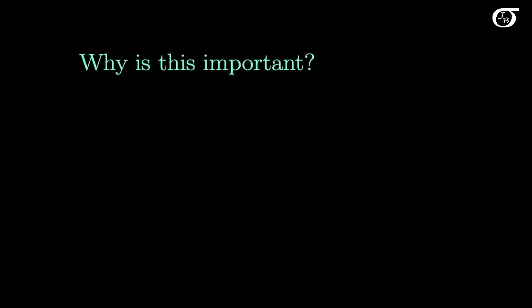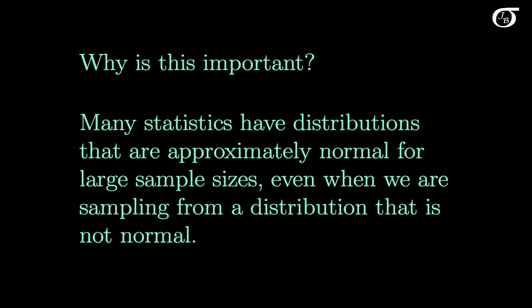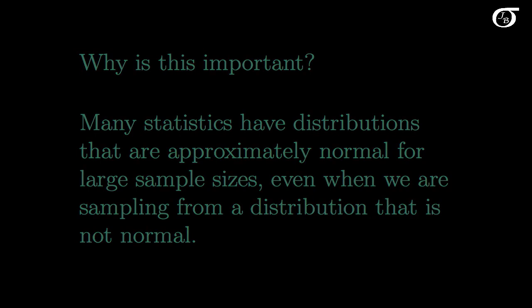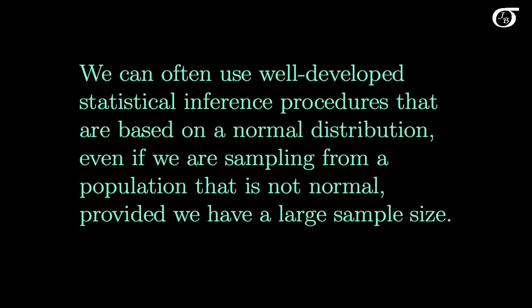Why is this important? The central limit theorem tells us that many statistics have distributions that are approximately normal for large sample sizes, even when we are sampling from a distribution that is not normal. That means we can often use well-developed statistical inference procedures based on a normal distribution, even if we are sampling from a non-normal population, provided we have a large enough sample size — even when we don't know what the underlying distribution is.